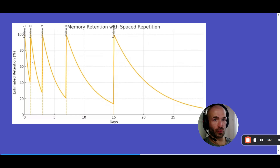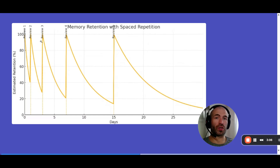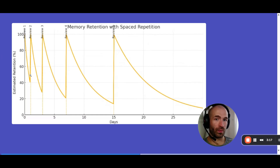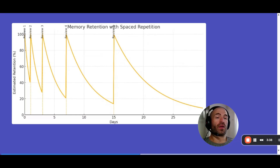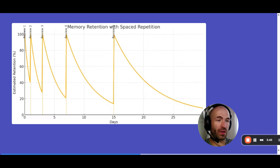Ideally, you'll review whatever you're learning many times using spaced repetition. You learn it today, then review it tomorrow — and I recommend you continue: day one, day three, day six, day fifteen. If you're able to review every single day for the first month, you're going to remember it much better. Ideally, you space the reviews in time and continue reviewing it at least a few weeks into the future, maybe even a few months depending on what you're learning.